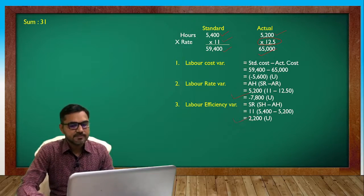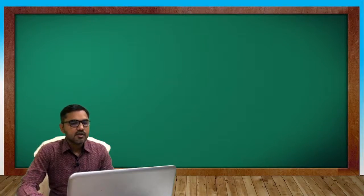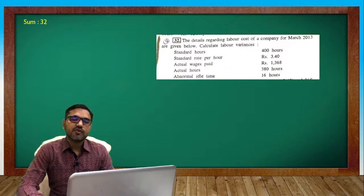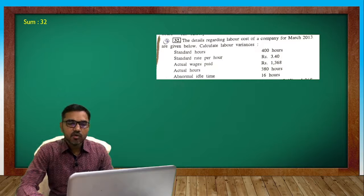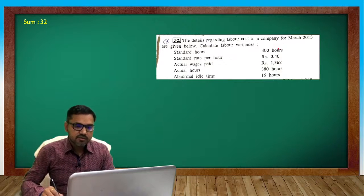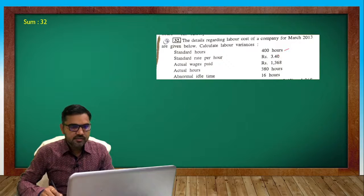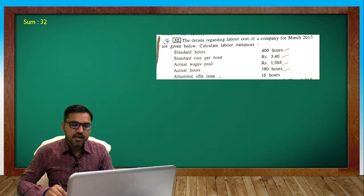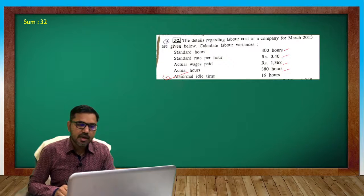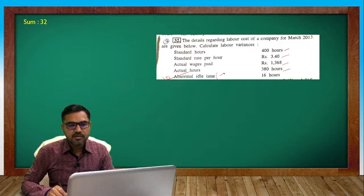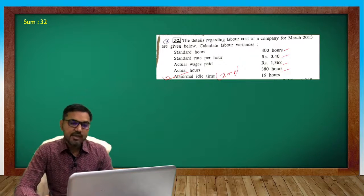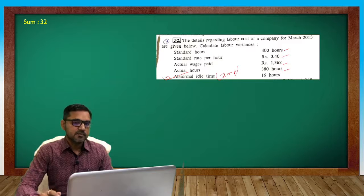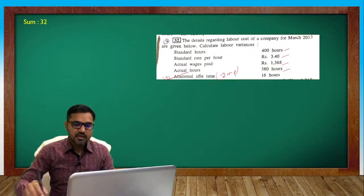Next question 32. Details regarding labor cost for March 2013 are given below - calculate labor variances. Standard hours 400 hours are given, standard rate is given, actual wages paid and actual hours, and one new detail has come here which is especially important: abnormal idle time. Now let me explain this. In this question until now, we haven't discussed in any formula that we use idle time. So if we talk about what idle time is...